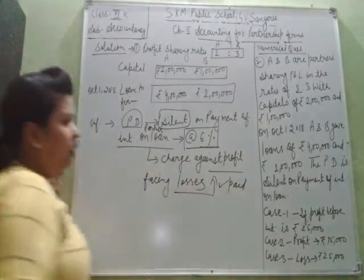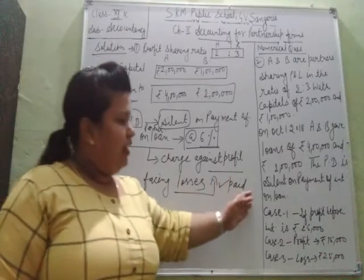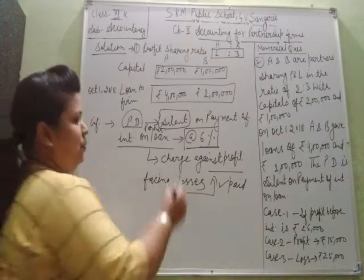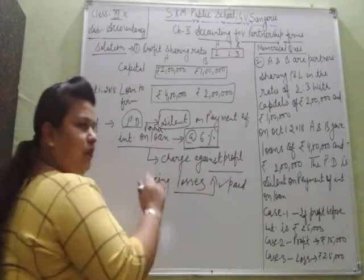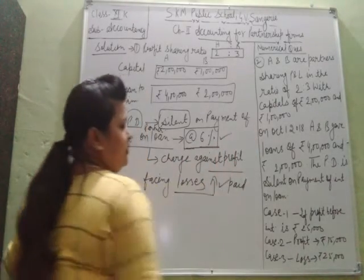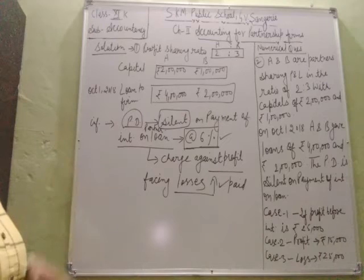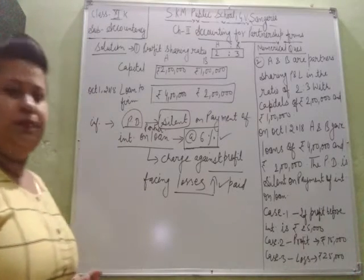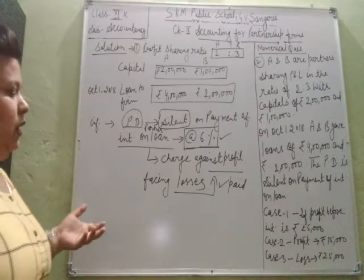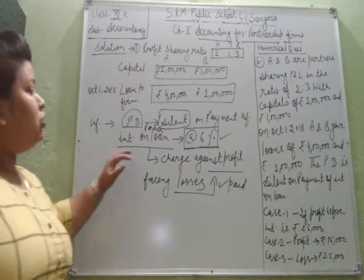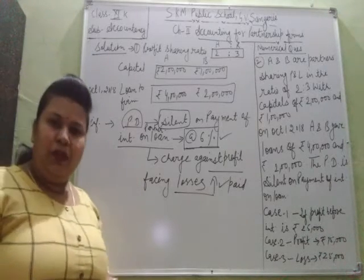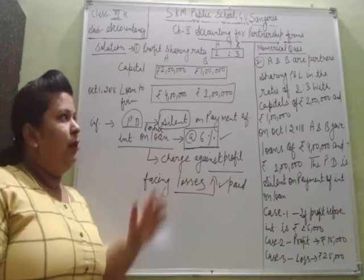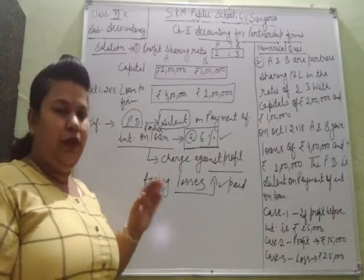It will be compulsory payment even if the firm is facing losses. In that condition also, interest on partner's loan will be paid. So since the partnership deed is silent on payment of interest, there is a provision that interest will be paid at the rate of 6% per annum. We have to calculate the interest on partner's loan and the remaining profit to be distributed among partners A and B.